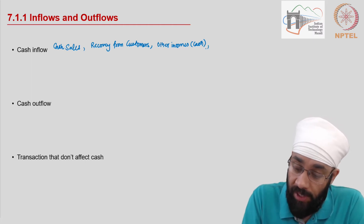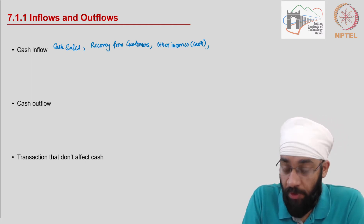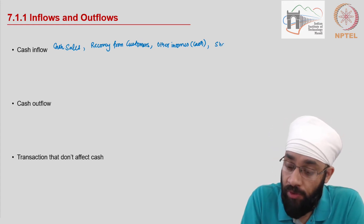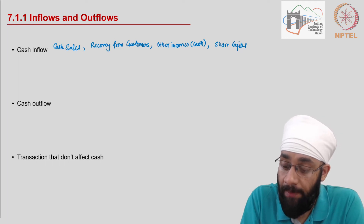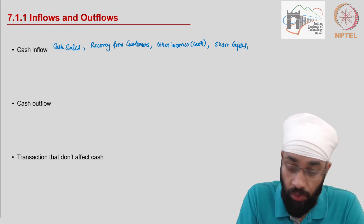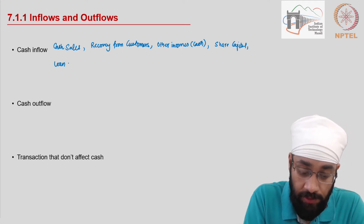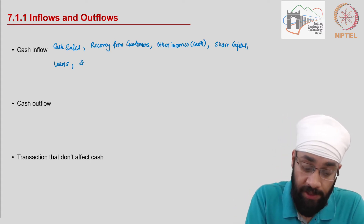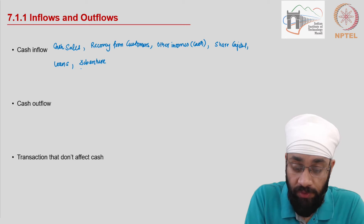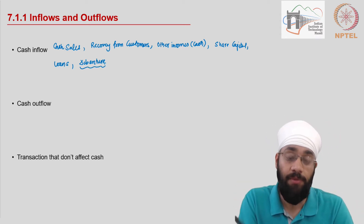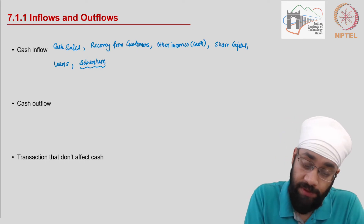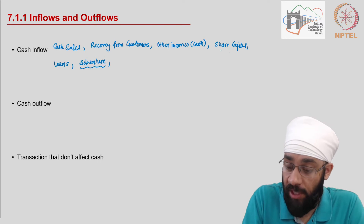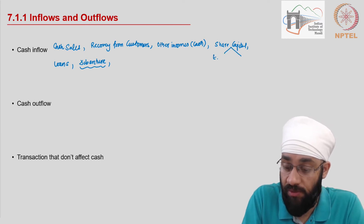Other than this, you could raise new capital. Shareholders can bring in money through share capital. You could also raise loans — loans from banks, loans from other financial institutions. Debentures are also a kind of loan you take not from one institution but from multiple institutions or individuals.